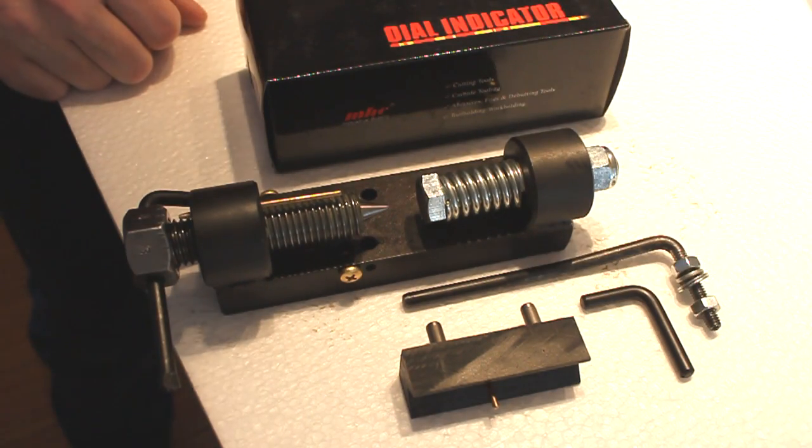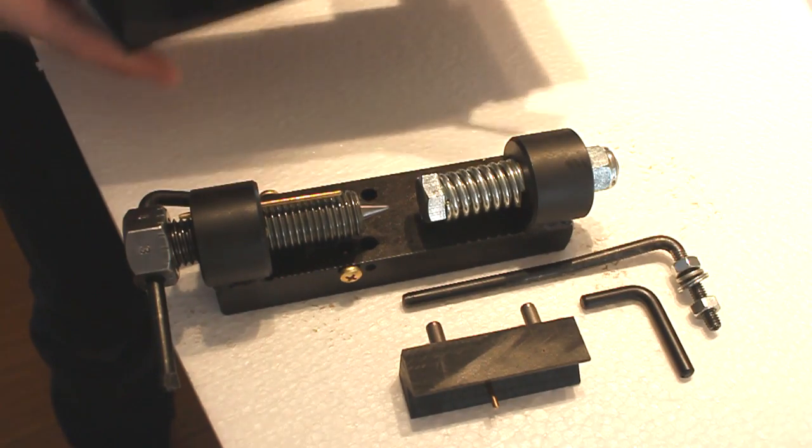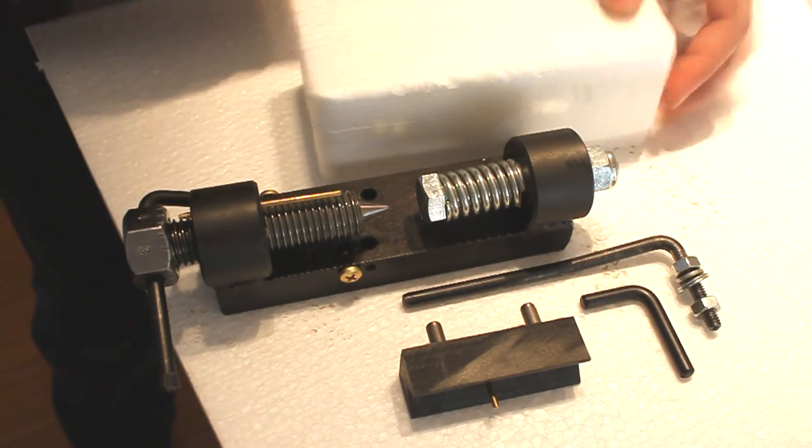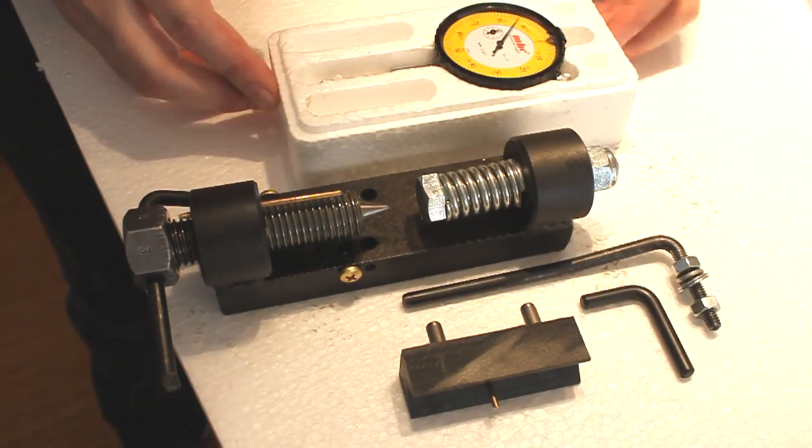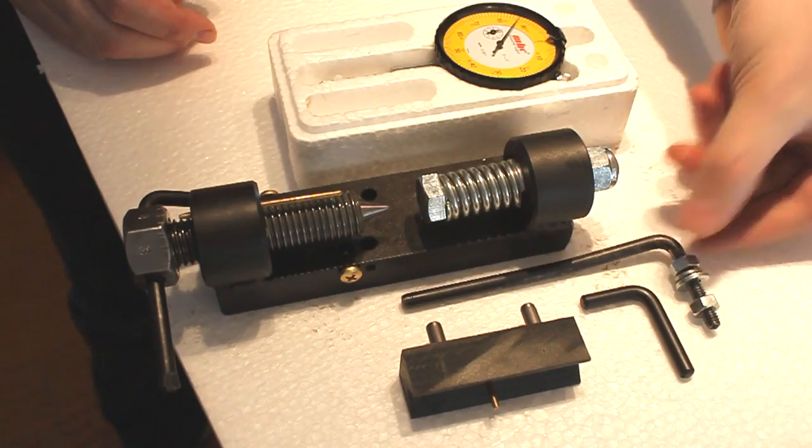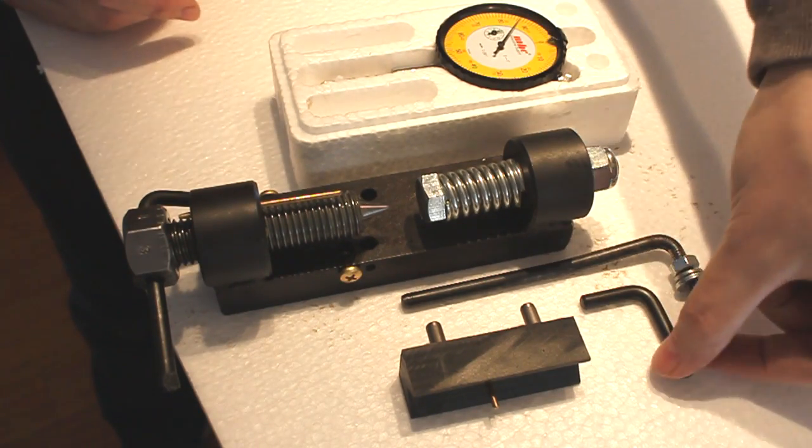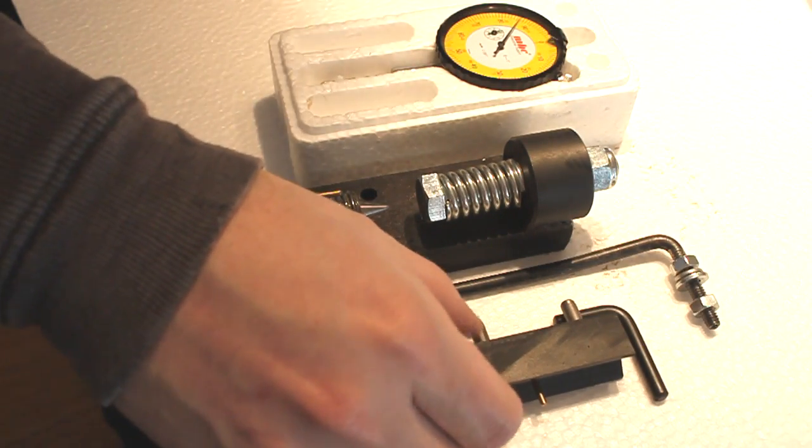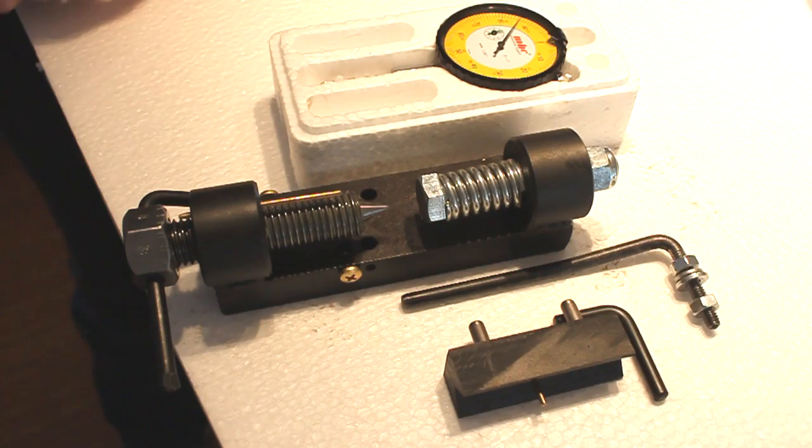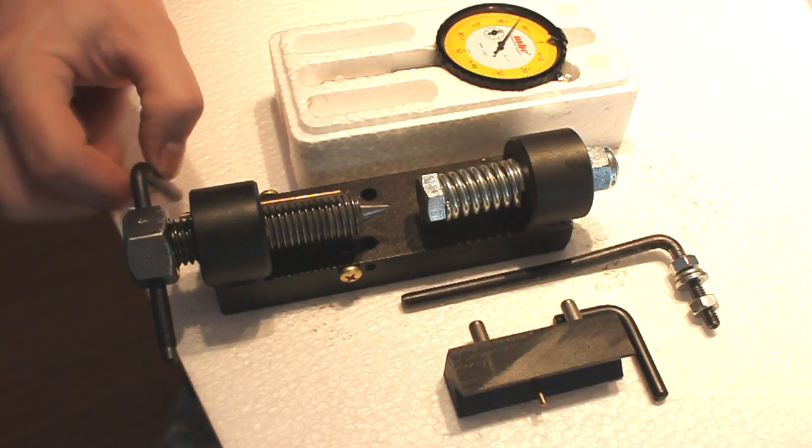This is the main unit. This is the dial indicator. This is the little armature that holds the dial indicator and these are evidently parts for other purposes because I ordered the multi-purpose tester. I haven't really looked into that yet but I figured if I'm going to buy it I might as well buy the full featured one.